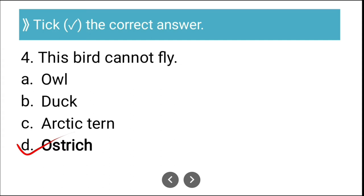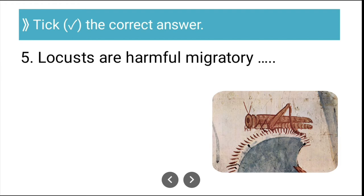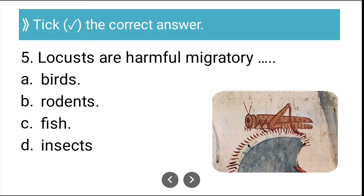Question five: Locusts are harmful migratory — birds, rodents, fish, or insects? The correct answer is insects. Locusts are insects and they are harmful insects that migrate from one place to another, and so they can be classified as harmful migratory insects.